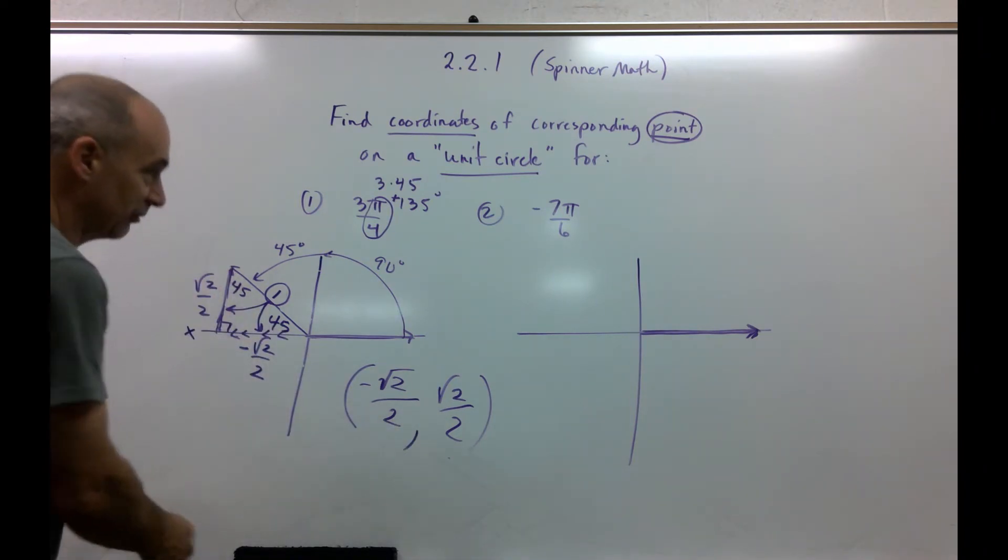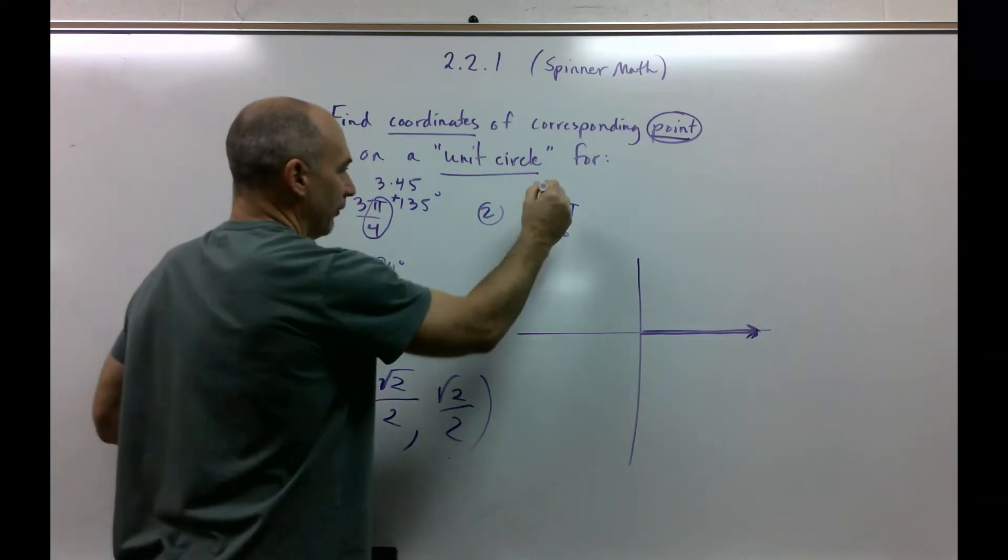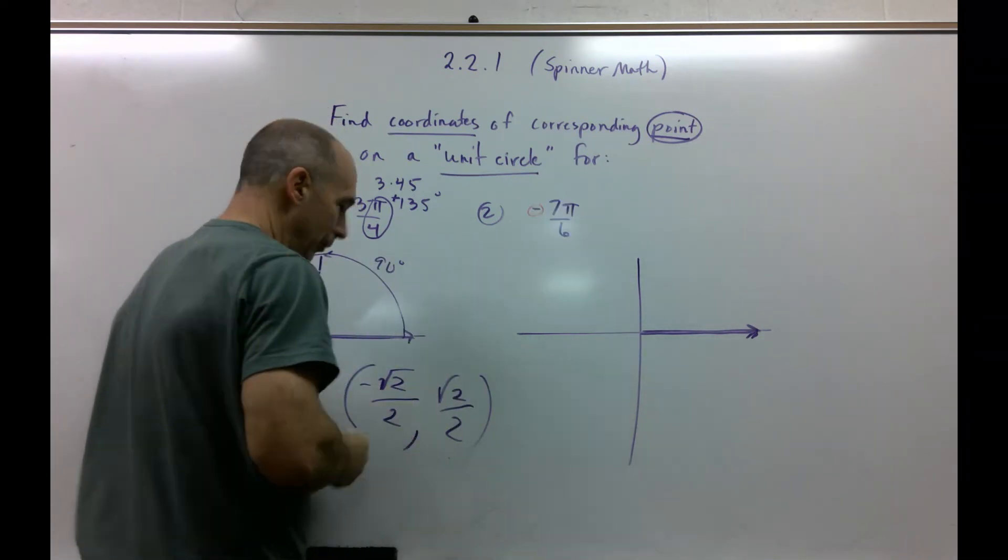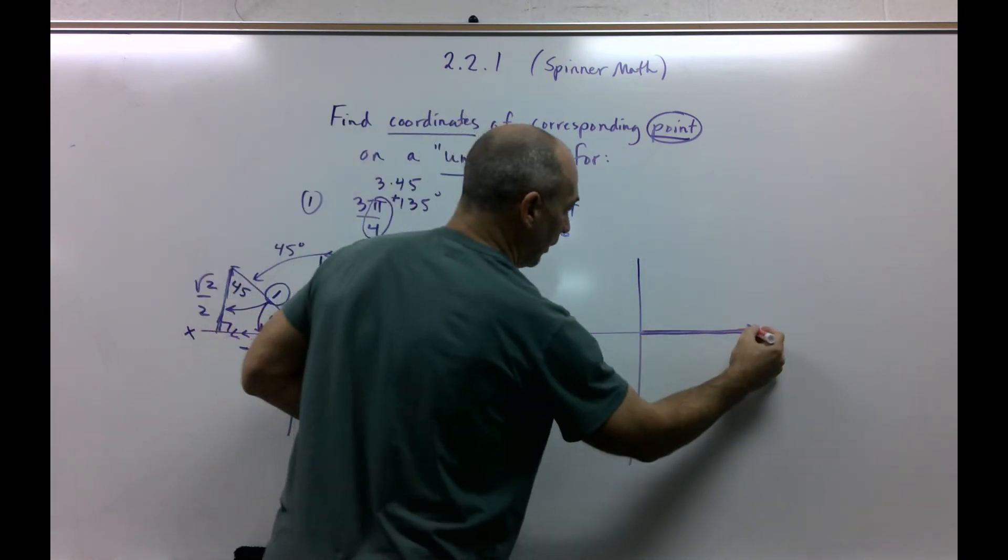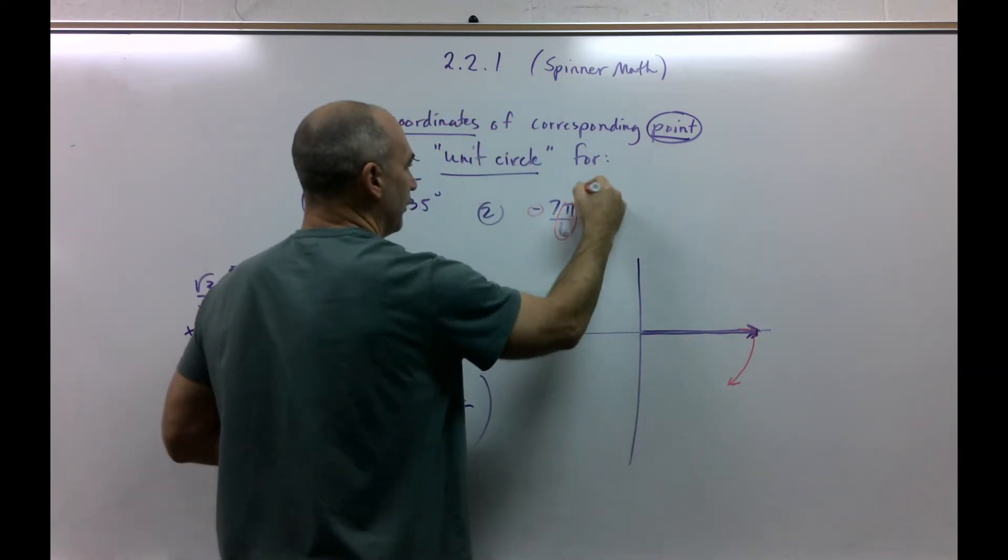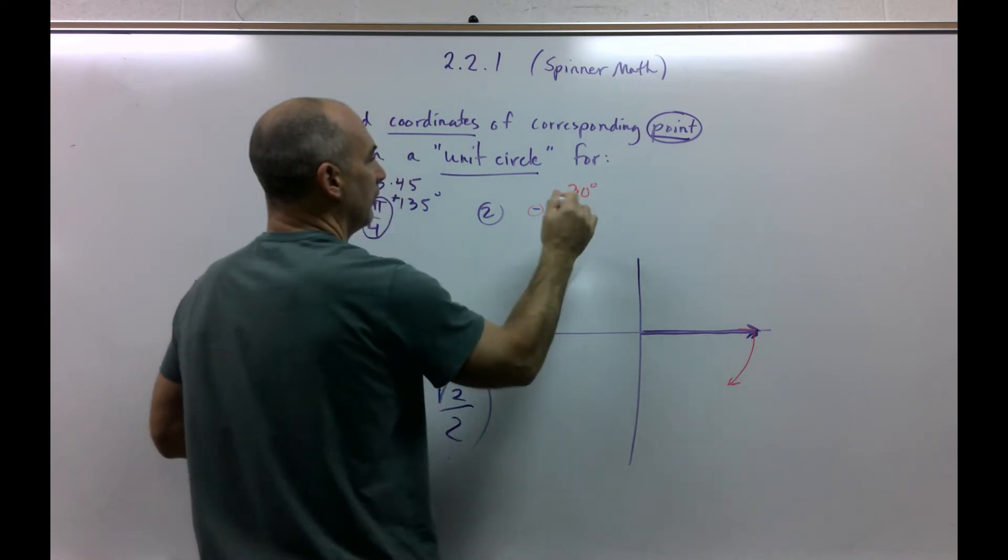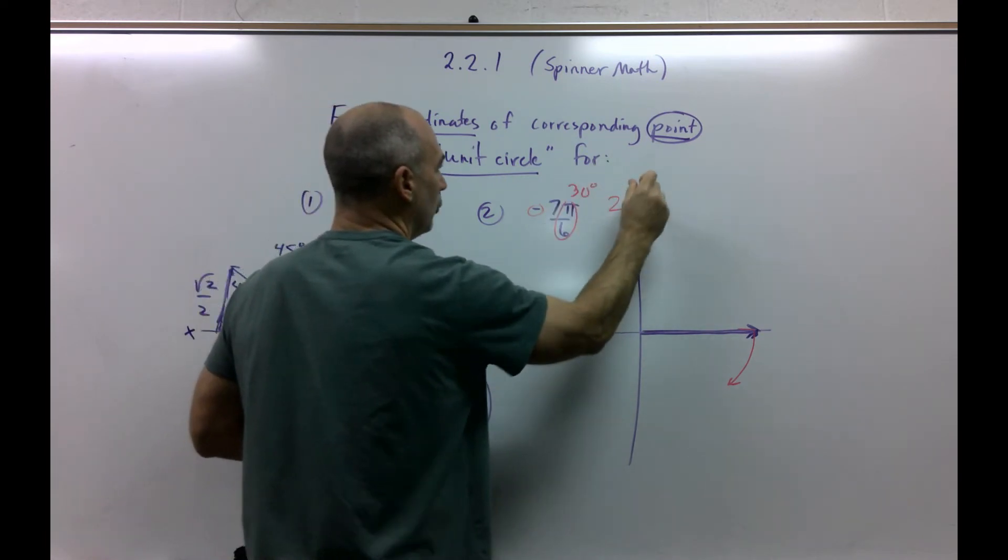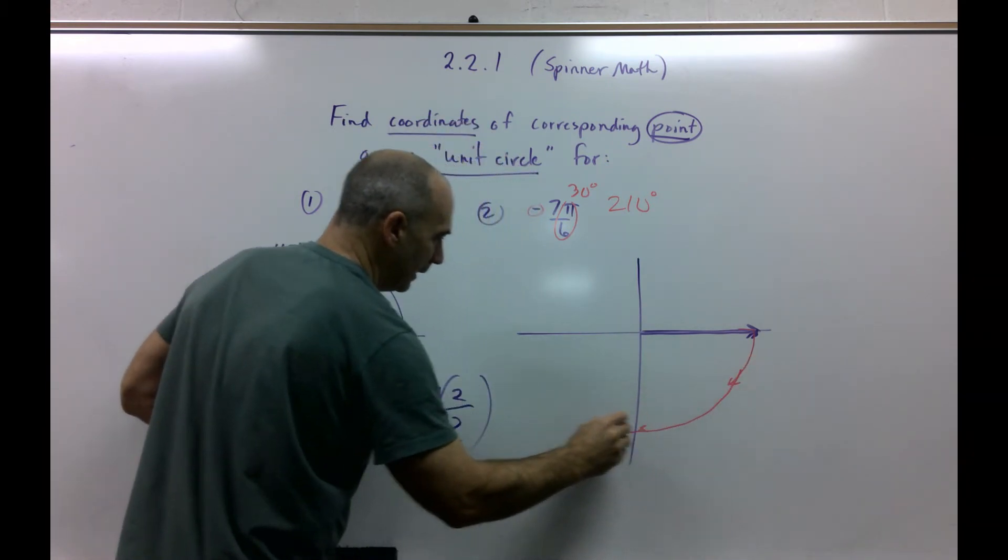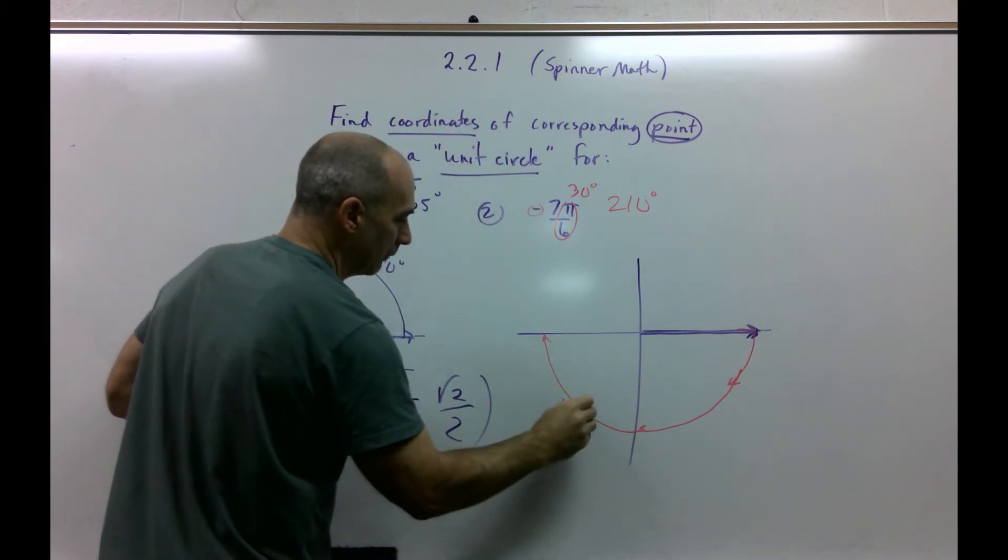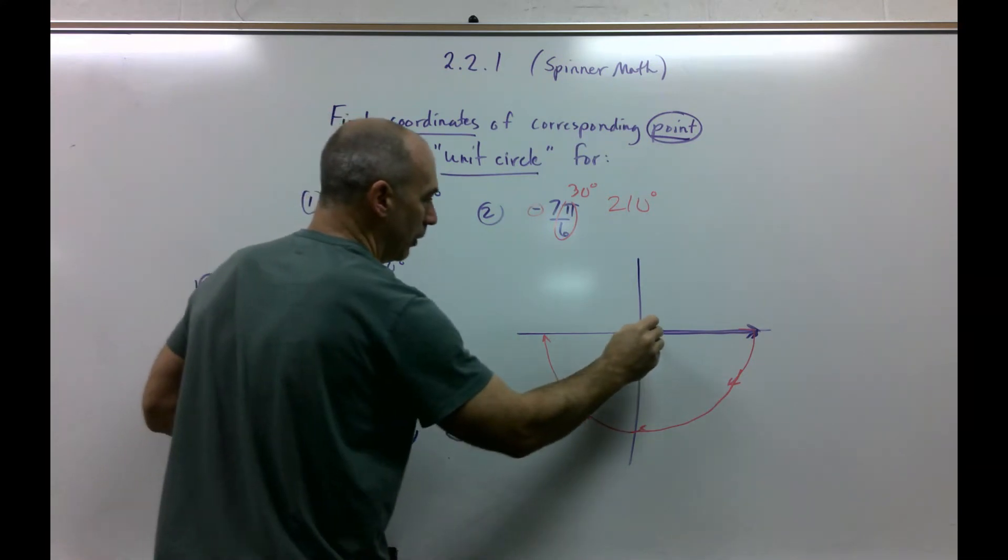And that's the coordinate point of the very end of the spinner. So let's go to this one. Negative. So we've got to go down. So our spinner starts here. We've got to go down. How far? Well, pi over 6 is 30. 7 times 30 is 210. Be careful. So there's 90. There's 180. How much farther do I need to go? 30.